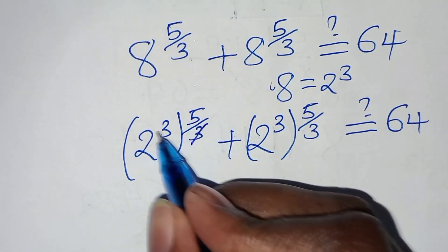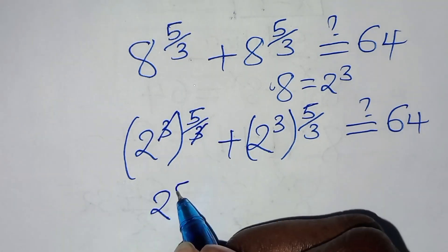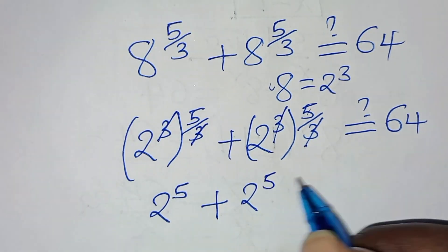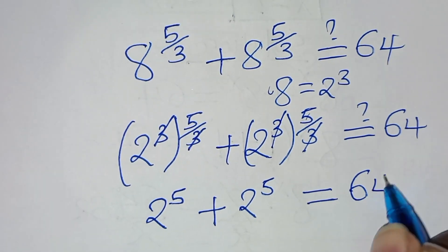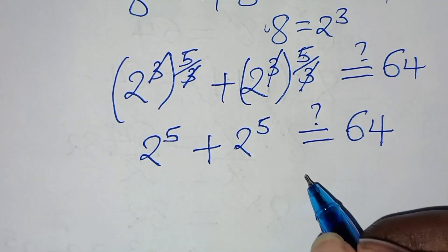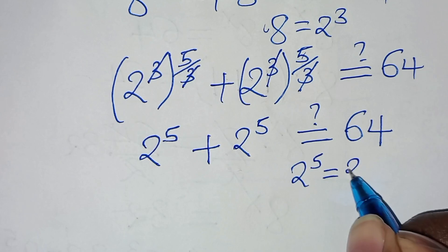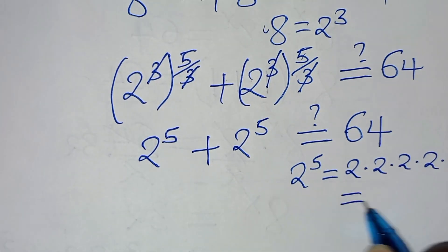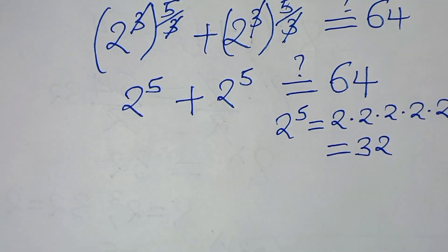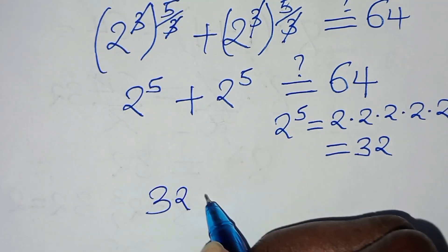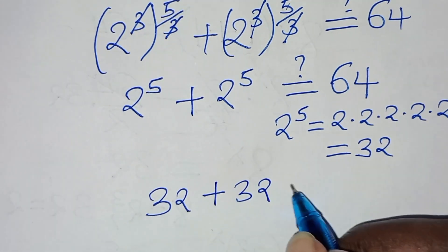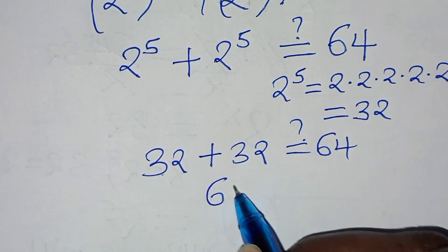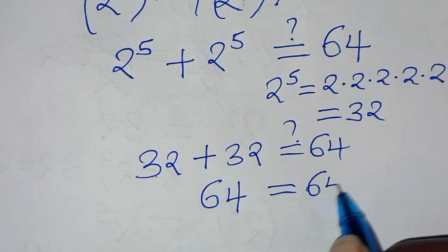So let's simplify here, so that we have 2 to the power of 5. Now, 2 to the power of 5 is the same thing as 2 times 2 times 2 times 2 times 2, and this is equal to 32. So we have 32 plus 32, this should give us a value of 64. So 32 plus 32 is equal to 64, which is equal to 64.